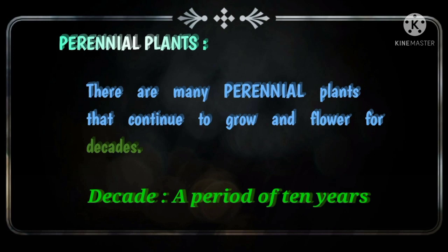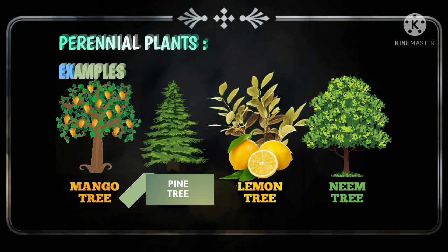The plants which live for many years are called perennial plants. For examples, mango tree, pine tree, lemon tree, neem tree, etc.